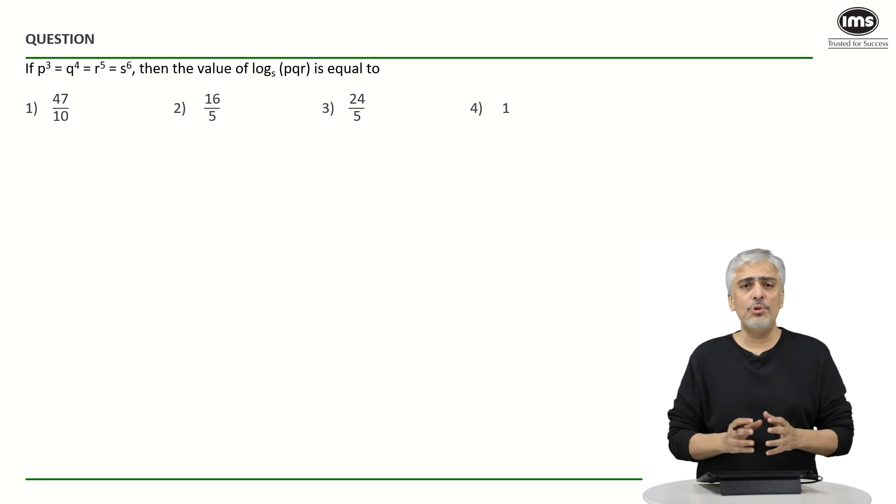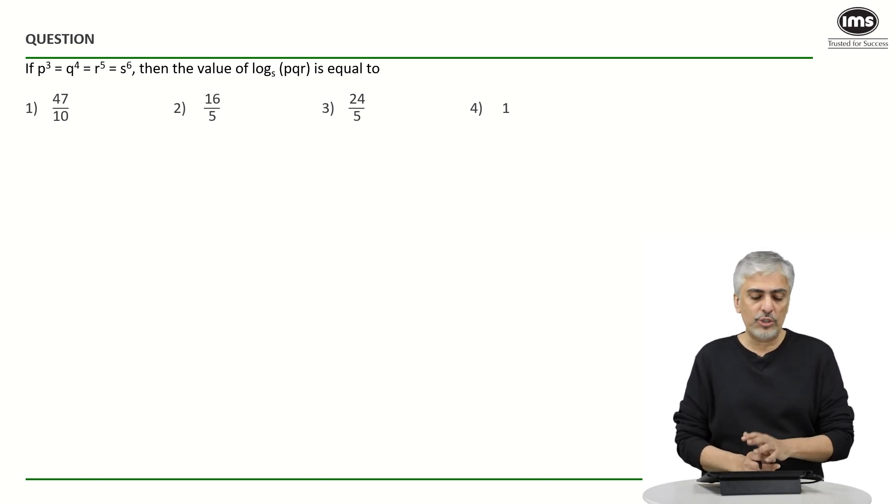Let's have a look at this question. I would say this is a classic log question. It has been asked so many times in different tests and exams that students would have definitely seen this earlier. P cube equals q raised to 4 equals r raised to 5 equals s raised to 6. Find the value of log pqr with base s.